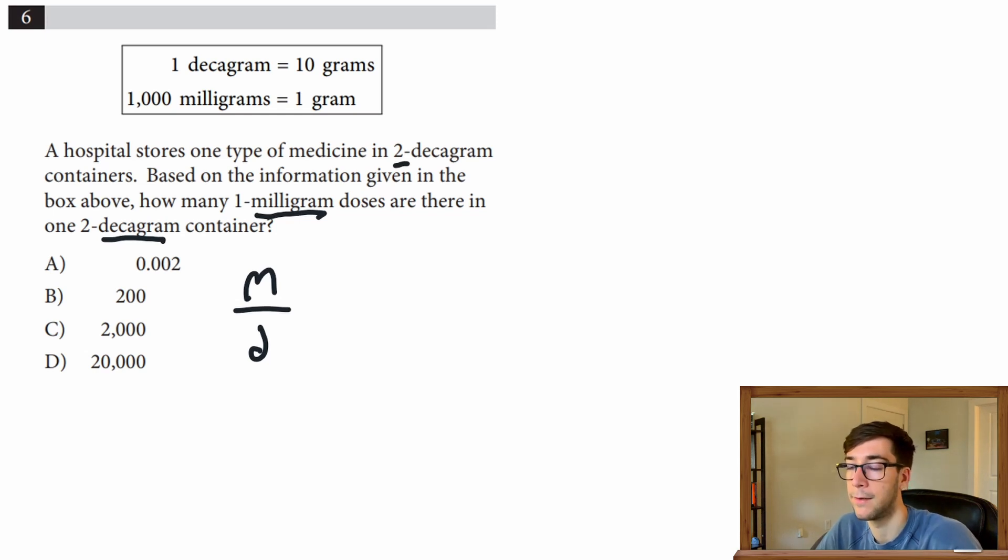So again, milligram over decagram. Let's start with the first piece of information: one decagram is 10 grams. We know we're converting these, so we're going to have one over the other. We see that we have decagrams on the bottom, so we're going to start with one decagram and 10 grams.